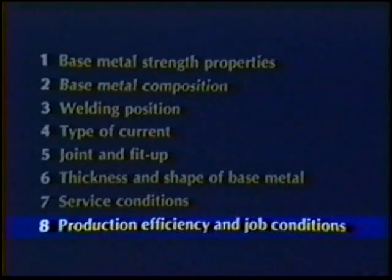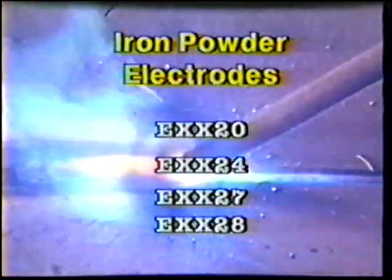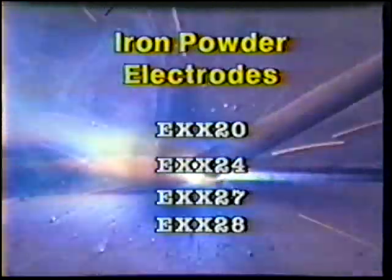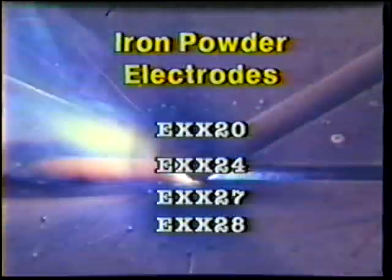Point eight: production efficiency and job conditions. Some electrodes are designed for high deposition rates but may be used only in certain welding positions. If they can be used, select the high iron powder types: EXX20, 24, 27, or 28. Other conditions may be present which will require experimentation to determine the most efficient electrode.